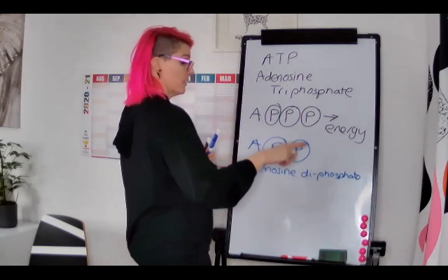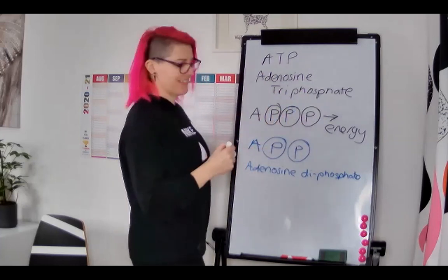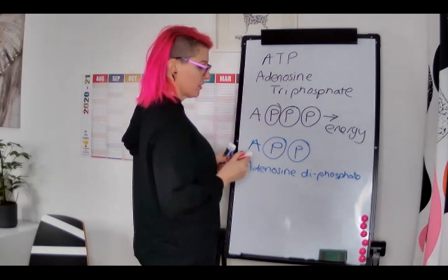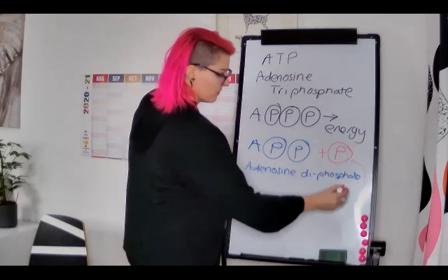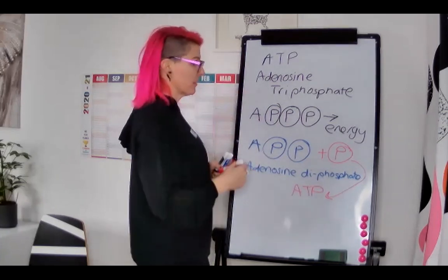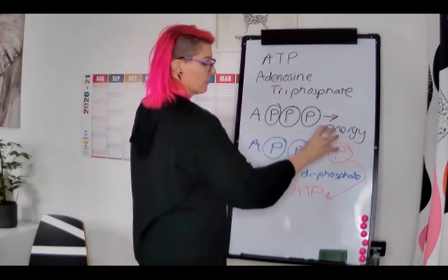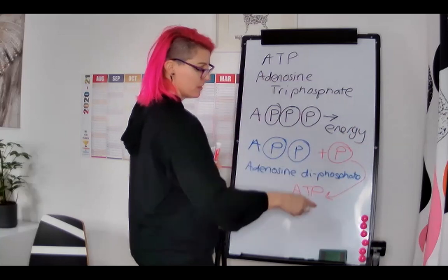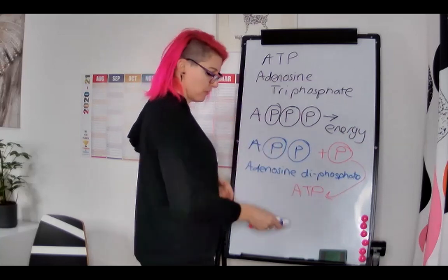So what we need to do is re-synthesize ATP. We need to add another phosphate back on so we can re-create ATP and continue that energy process. So: adenosine triphosphate — three phosphates — one breaks off giving us the energy, leaving adenosine diphosphate. Then we add another phosphate to re-create ATP, our energy currency within the body. There are three ways to do that, which we'll look at in subsequent videos.